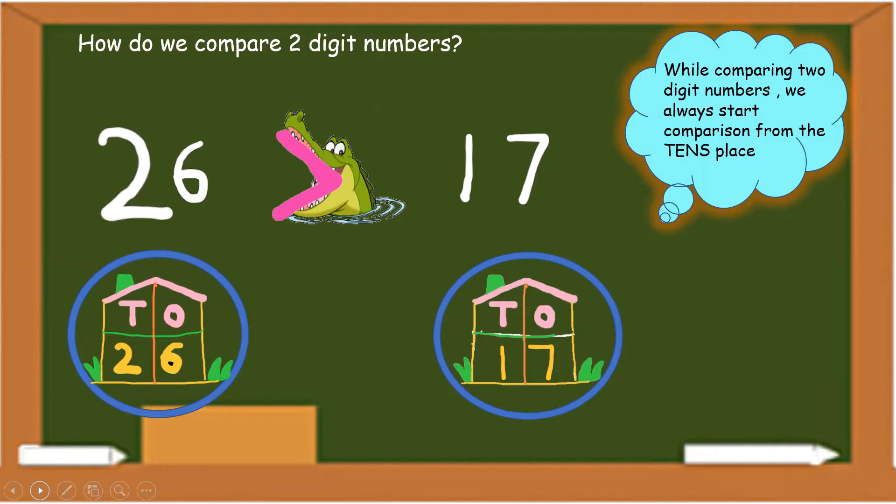So, again, Crocky munches which number. Yes, you are right. Its mouth is always towards the greater number. That is 26.